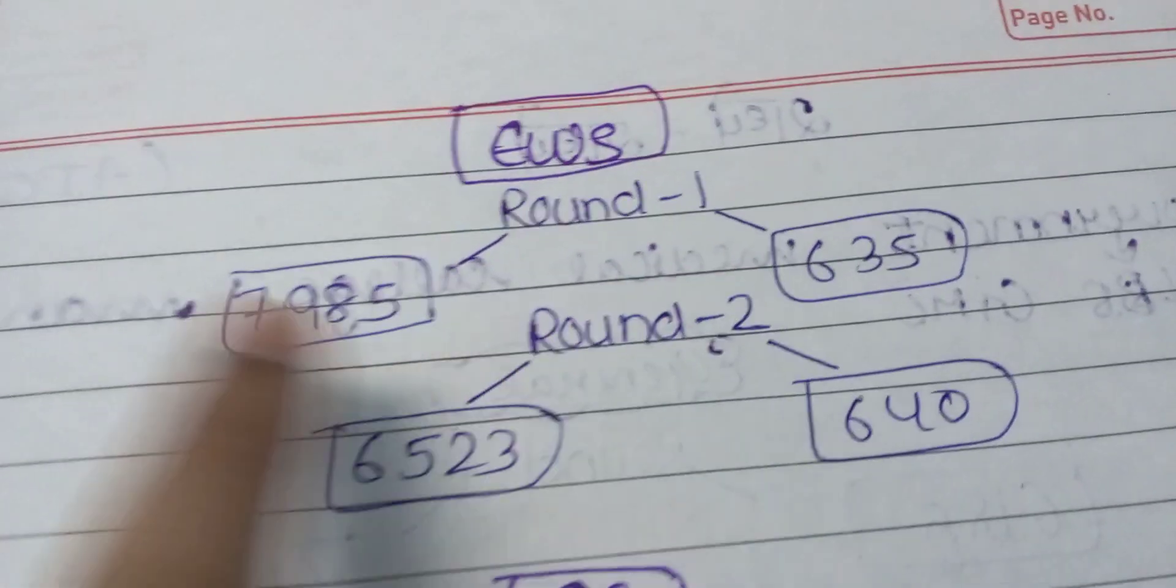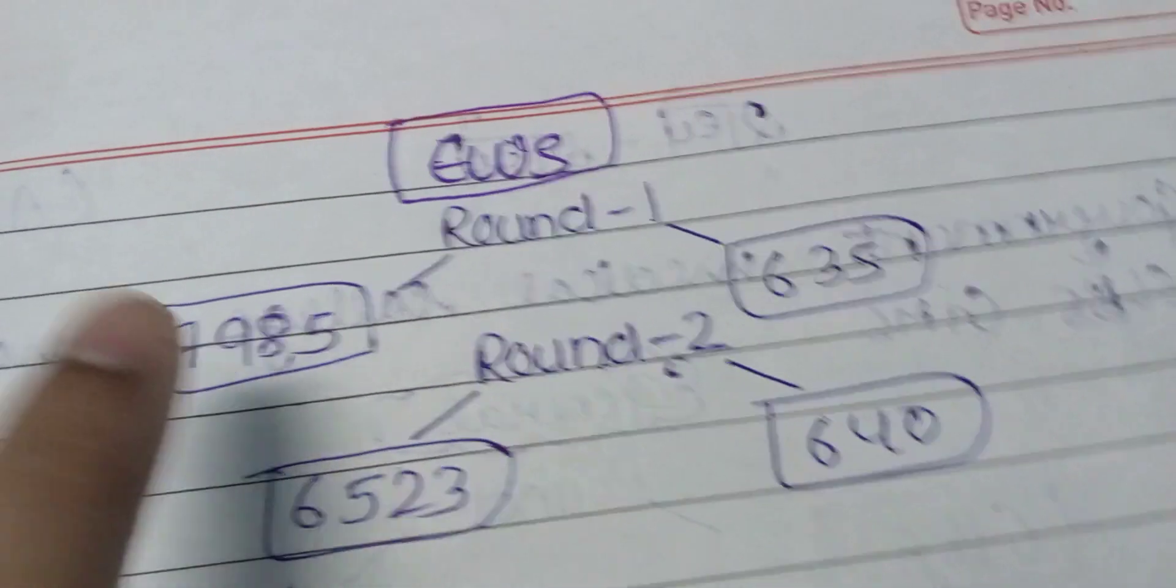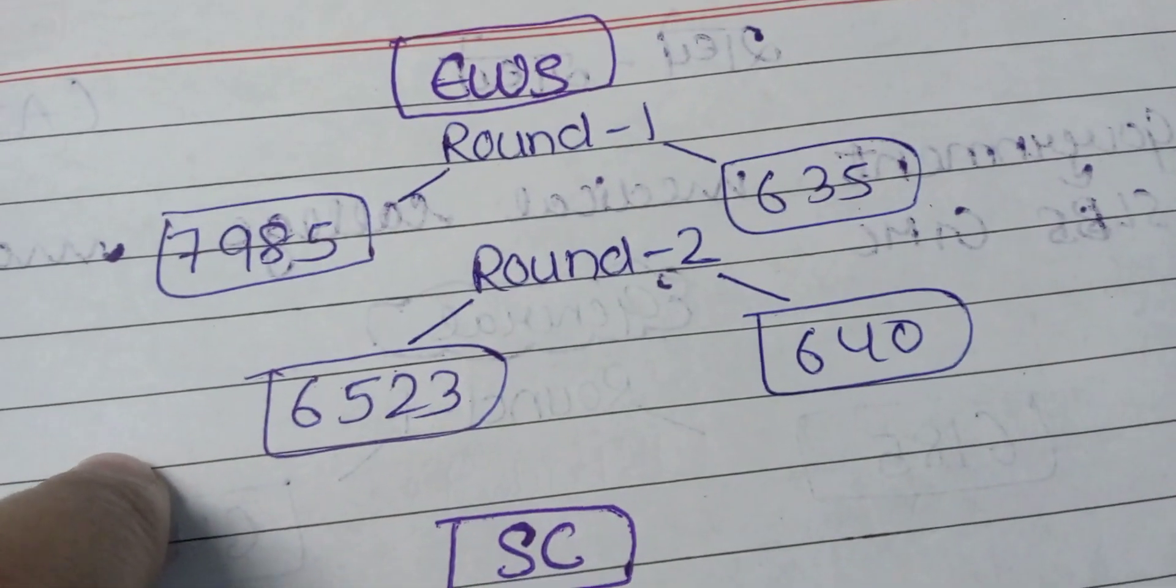EWS 635 marks and 7985 rank. Round 2 was 640 marks and 6523 rank.